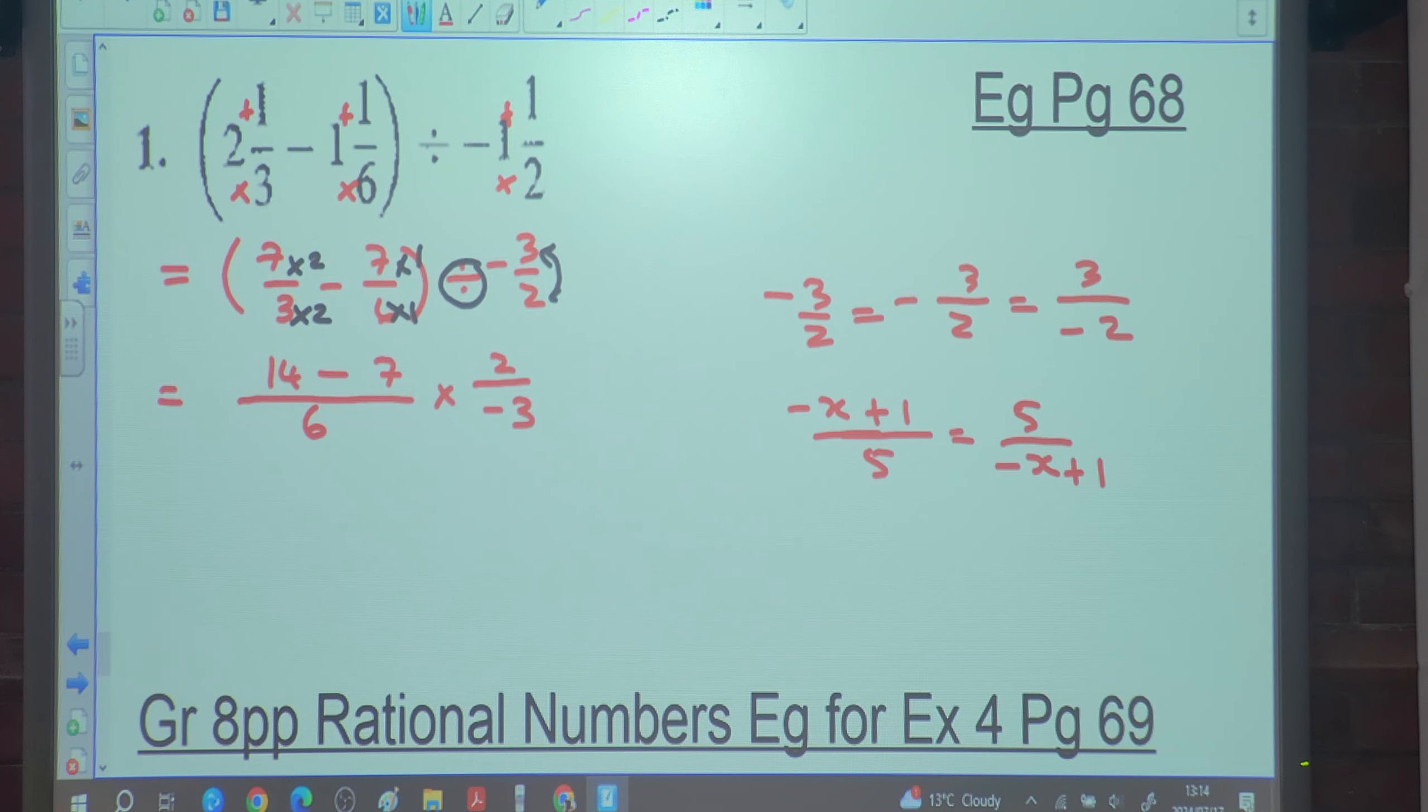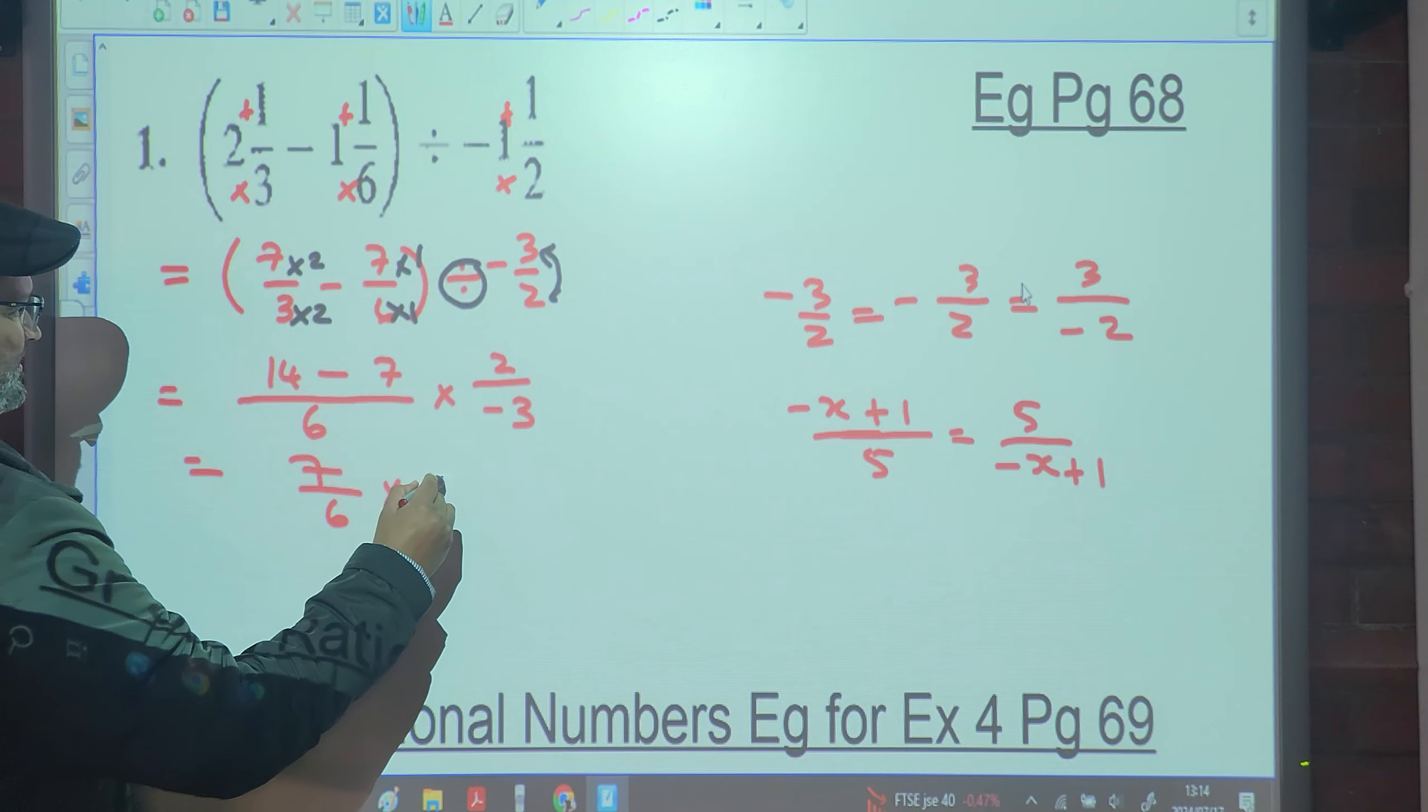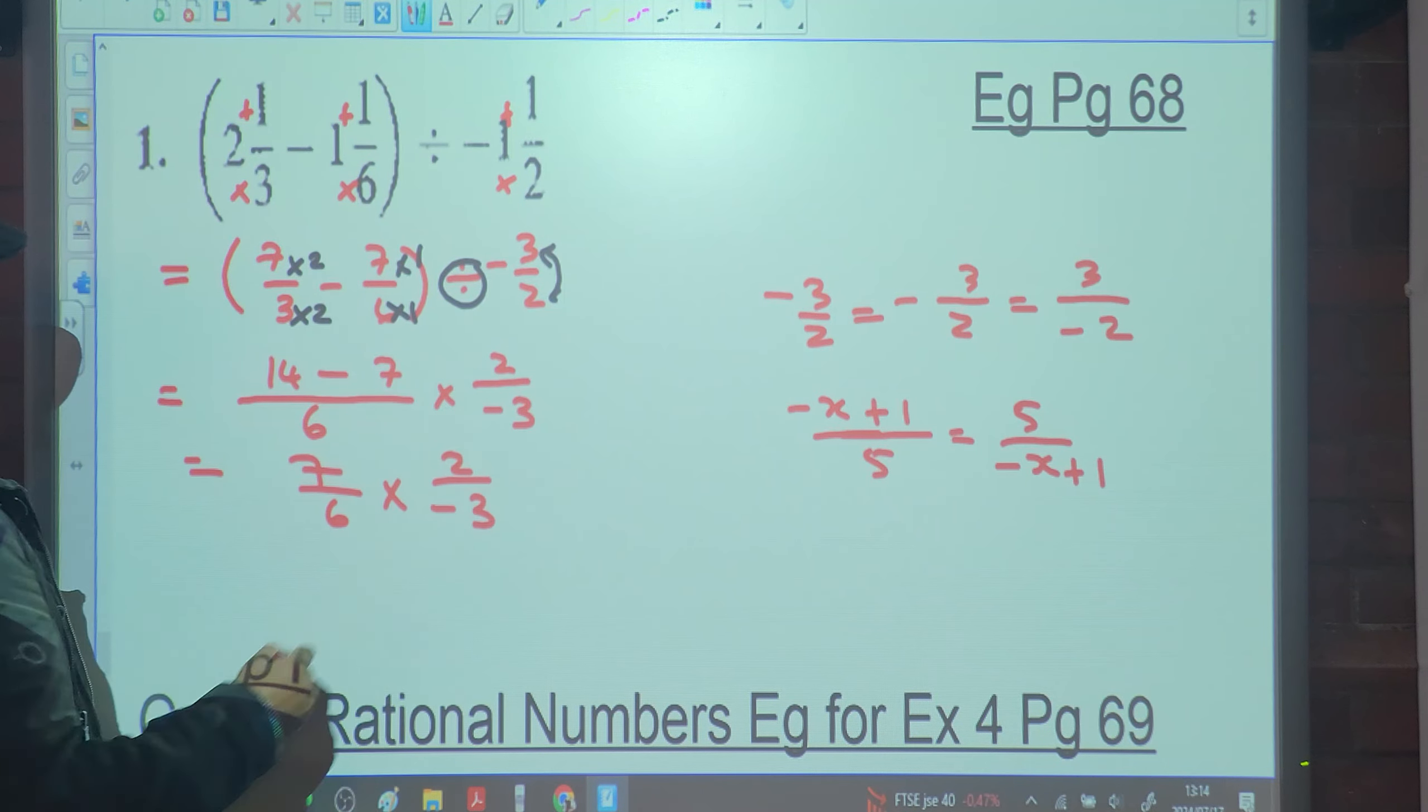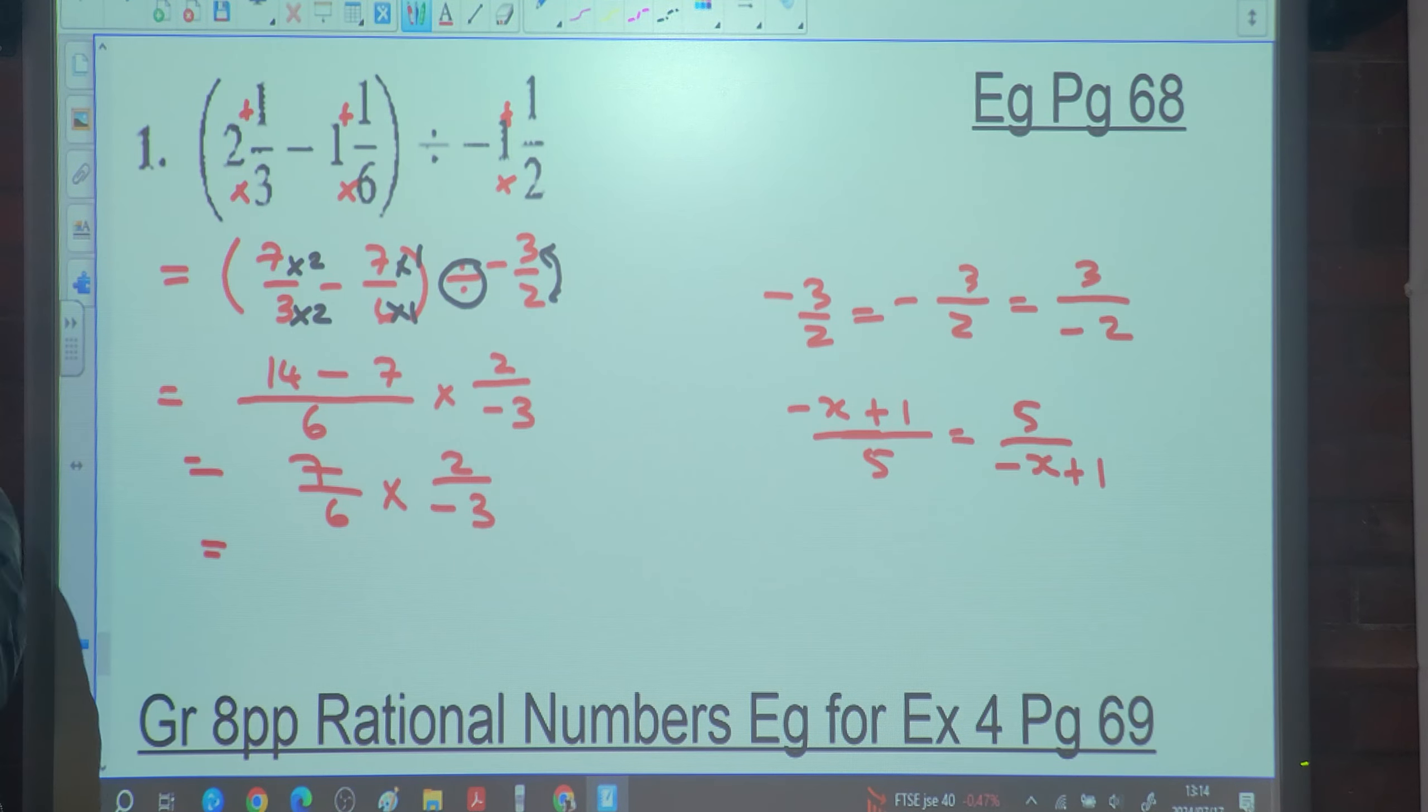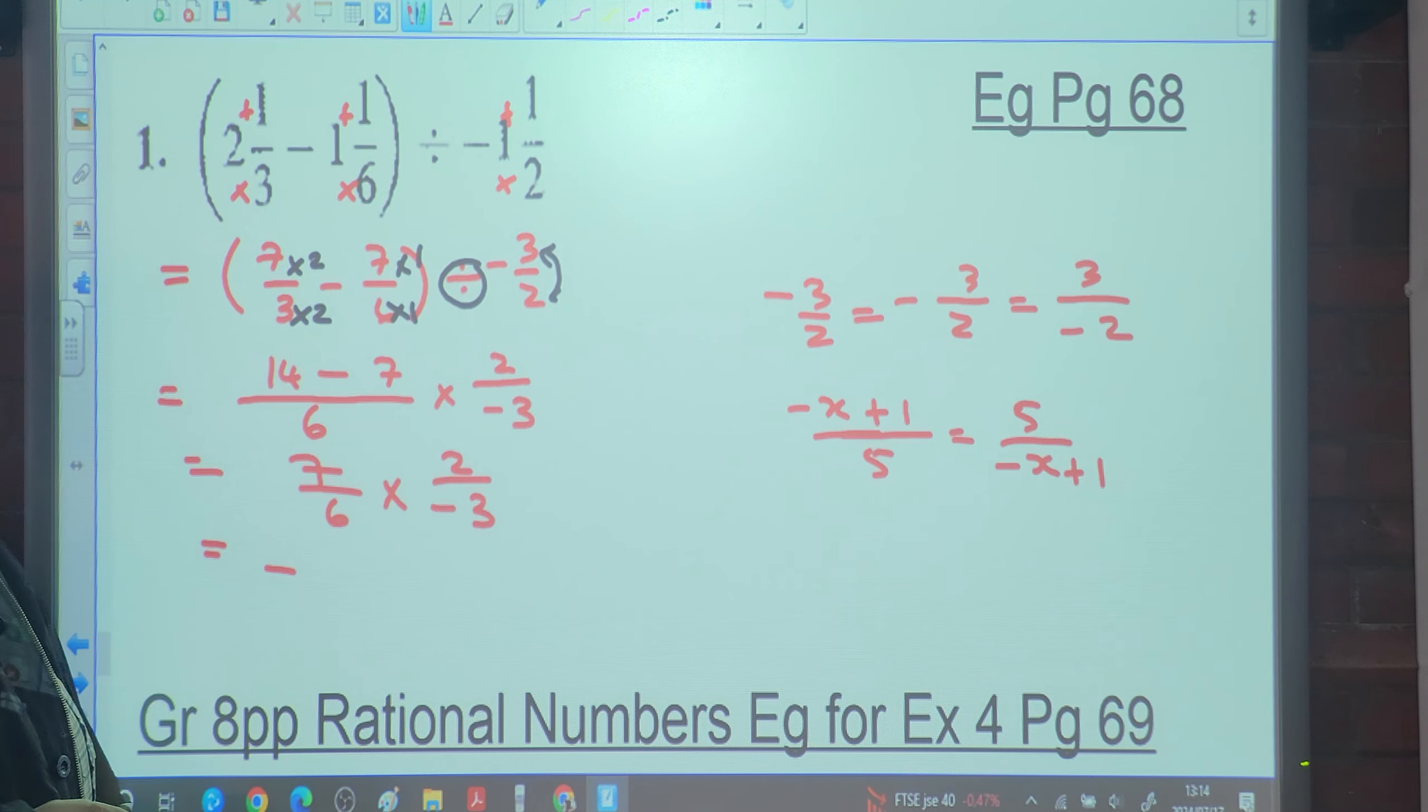And what is fourteen minus seven? Seven. Seven over six multiplied by two over negative three. What's positive times negative? Negative. The ultimate answer is, the final answer is going to be negative. You all agree with that?